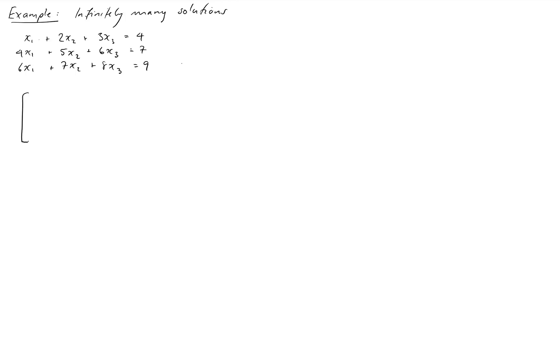So the first step is always to form our augmented matrix. We just write down the coefficients and the right-hand side. Here we go, 1, 2, 3, 4, 5, 6, 7, 8, 9. And if we want to remind ourselves what we're doing, put a little dashed line down there.